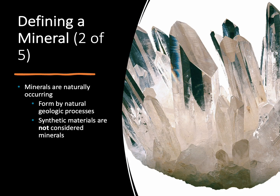The first characteristic is that a mineral has to be naturally occurring. This means that it has to form through some kind of natural geologic process — whether it's lava coming out of a volcano or salt forming in our oceans. Anything that's synthetic or man-made, that is not naturally formed, can never be a mineral.